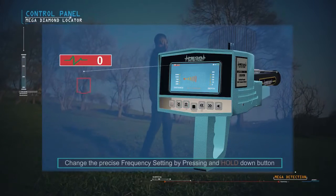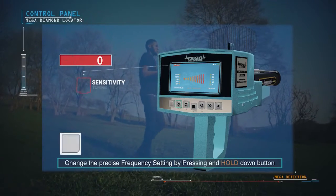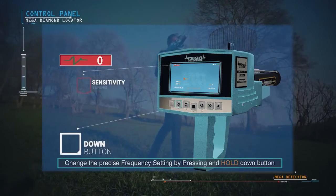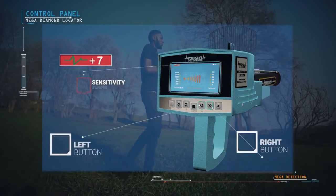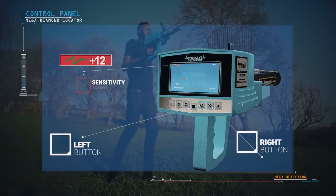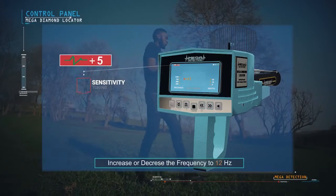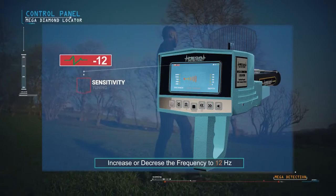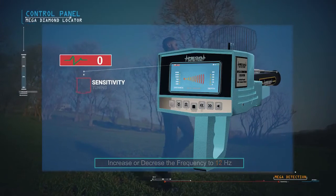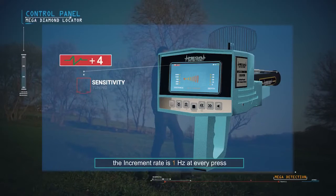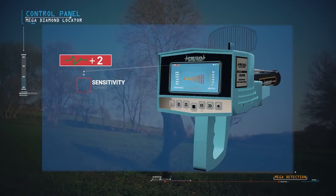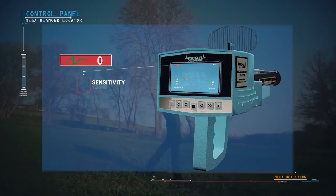You can change the precise frequency setting by pressing and hold down button until hearing a different tone and changing the value with the right and left buttons. The user can increase or decrease the frequency to 12 Hz. The increment rate is 1 Hz at every press. It is preferable to leave the precise frequency on the factory default at zero.